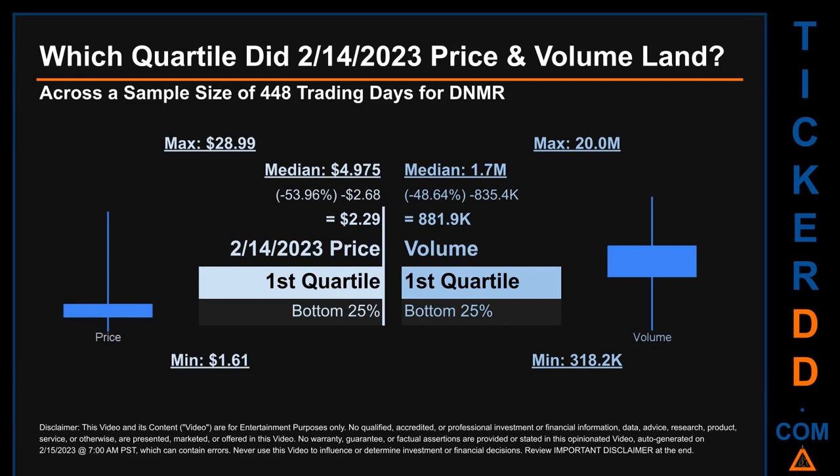Hello, my name is Maria. Which quartile did February 14th, 2023 price and volume land in, across a sample size of 448 trading days? The maximum end-of-day price for DNMR was $28.99 while the minimum was $1.61. Within that price range, February 14th, 2023's price of $2.29 landed within the first quartile, meaning it was within the bottom 25% of all sampled end-of-day prices. The day's volume also landed within the first quartile, at the bottom 25% of all sampled daily volume.